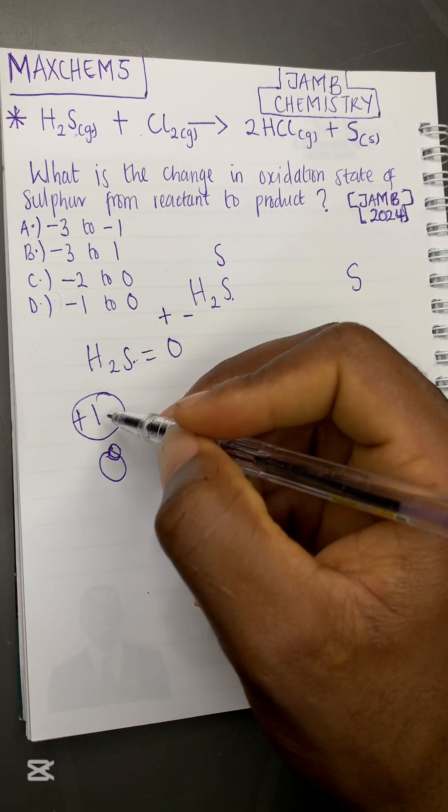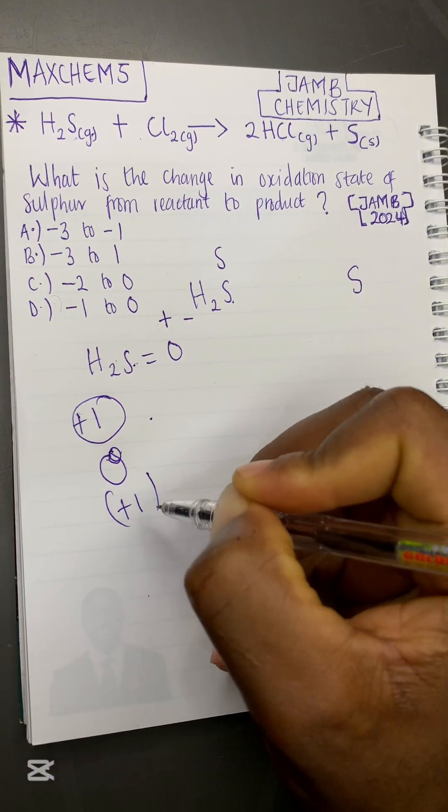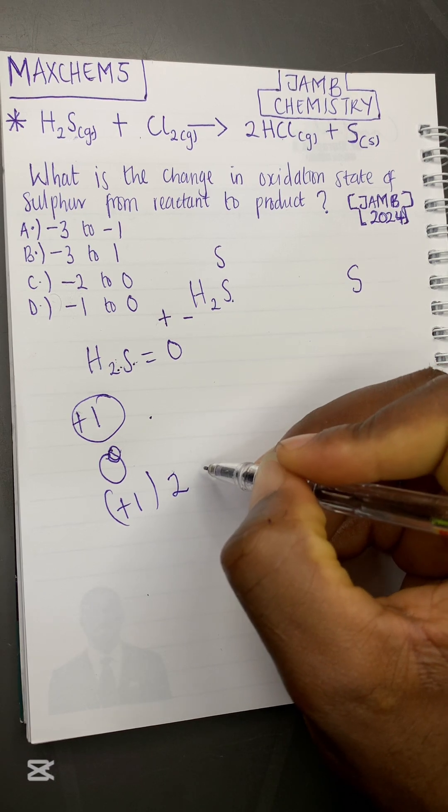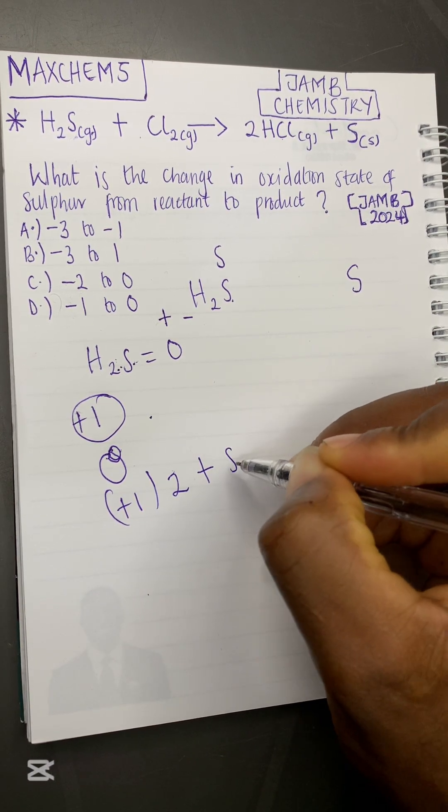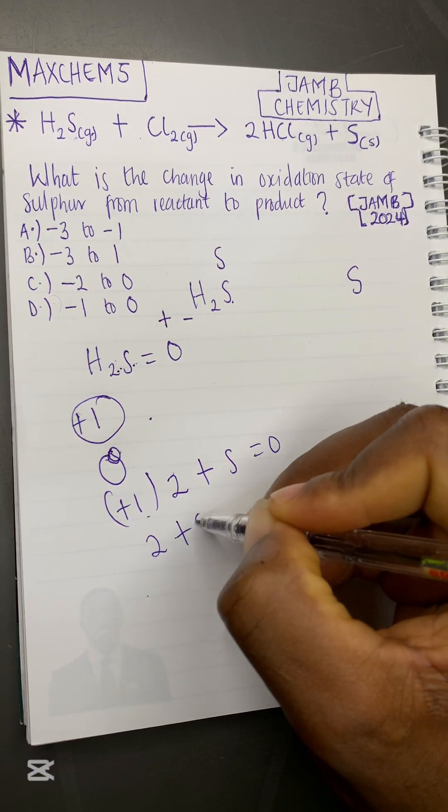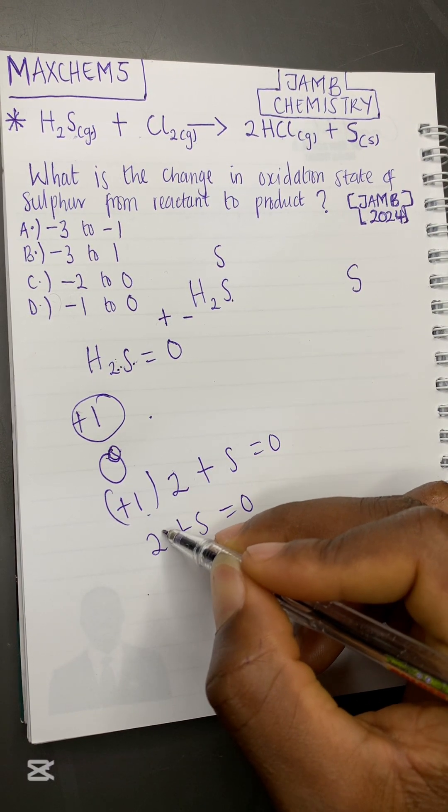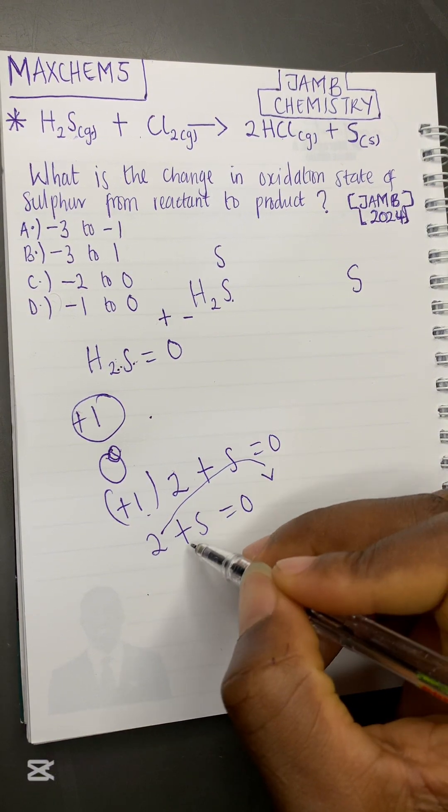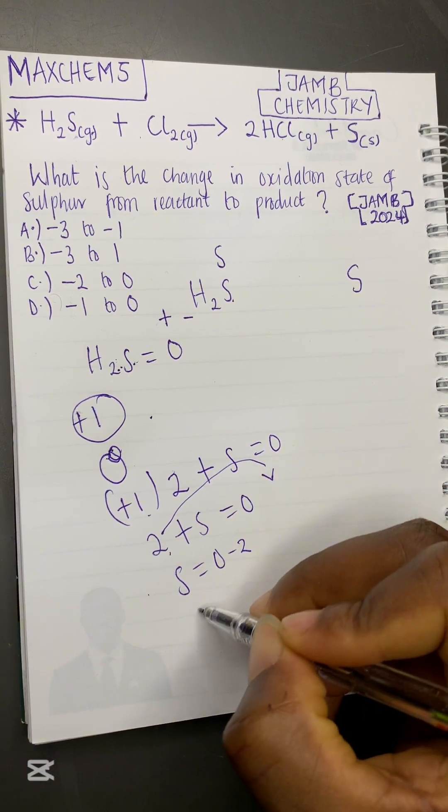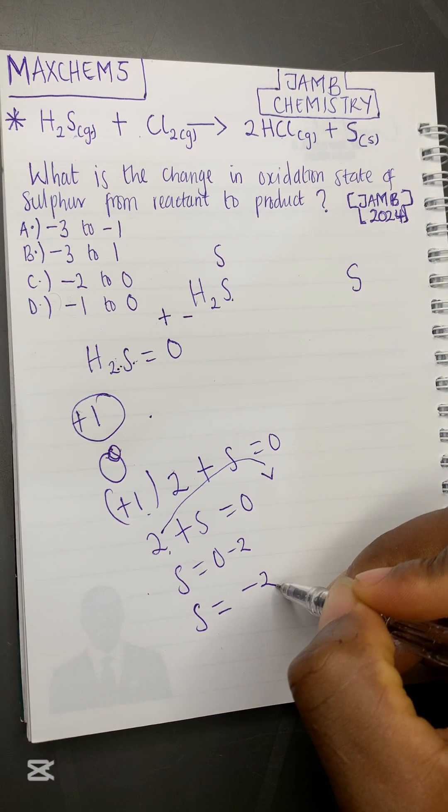Let us calculate the oxidation state of sulfur. If the oxidation state of hydrogen is plus one, then we are going to have plus one times two, because we have two atoms of hydrogen, then plus sulfur. We don't know the oxidation state of sulfur. Everything is equal to zero. So one times two is two, then two plus sulfur is equal to zero. All we have to do is just collect like terms by taking our two to the other side, and the positive sign will become negative. So we have S is equal to zero minus two. The oxidation state of sulfur is zero minus two, which is minus two. So the oxidation state of sulfur at the reactant side in H₂S is minus two.